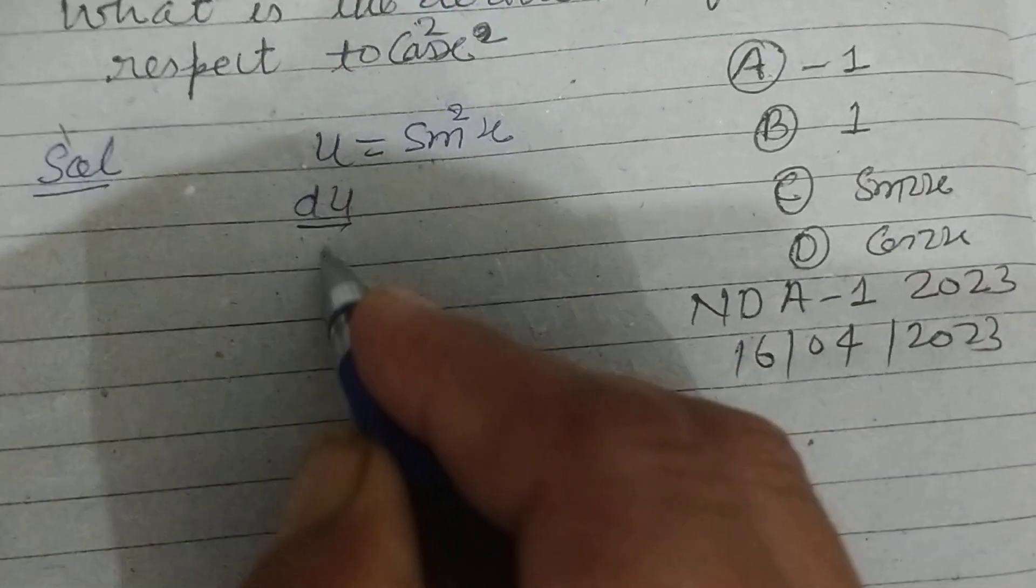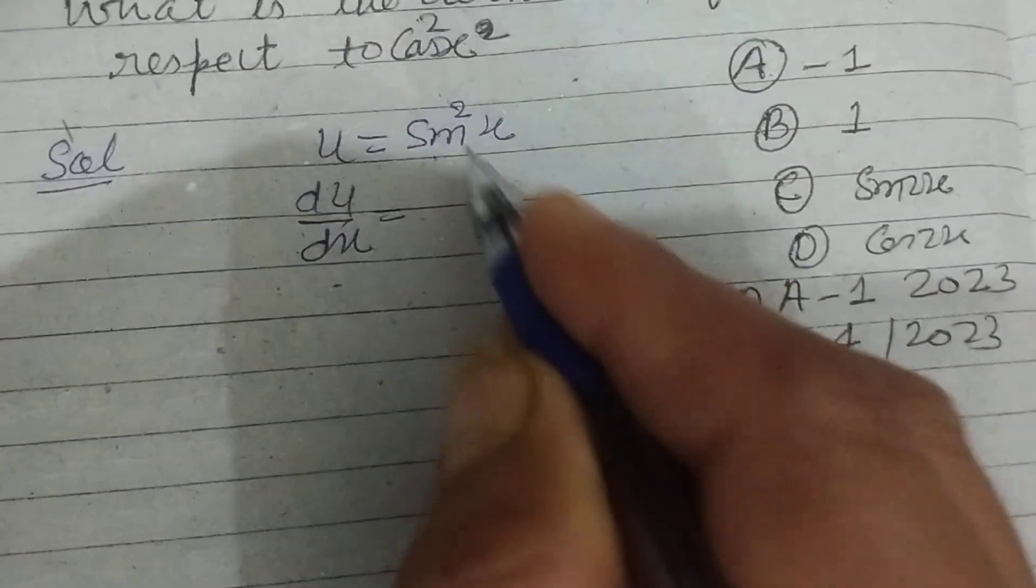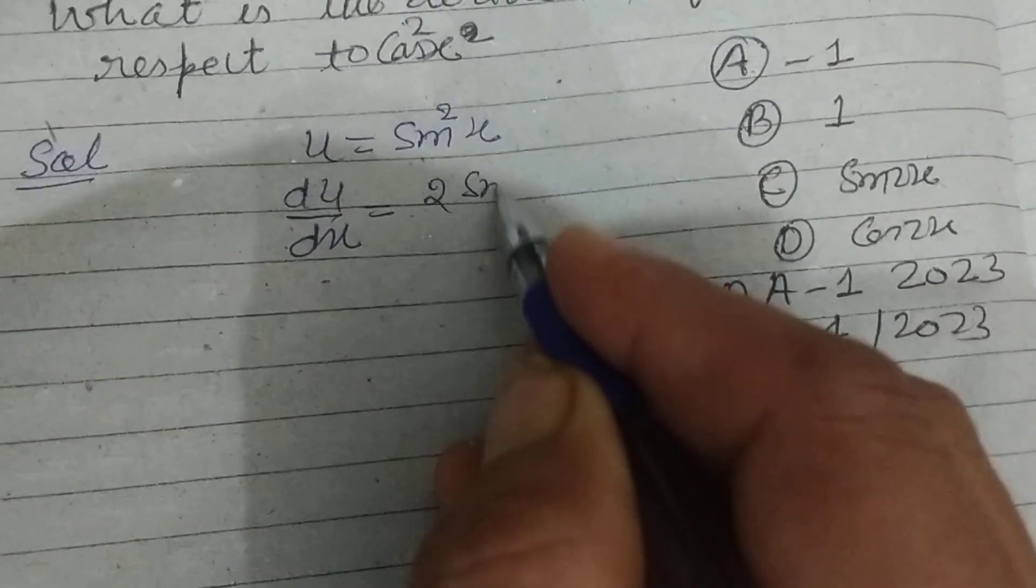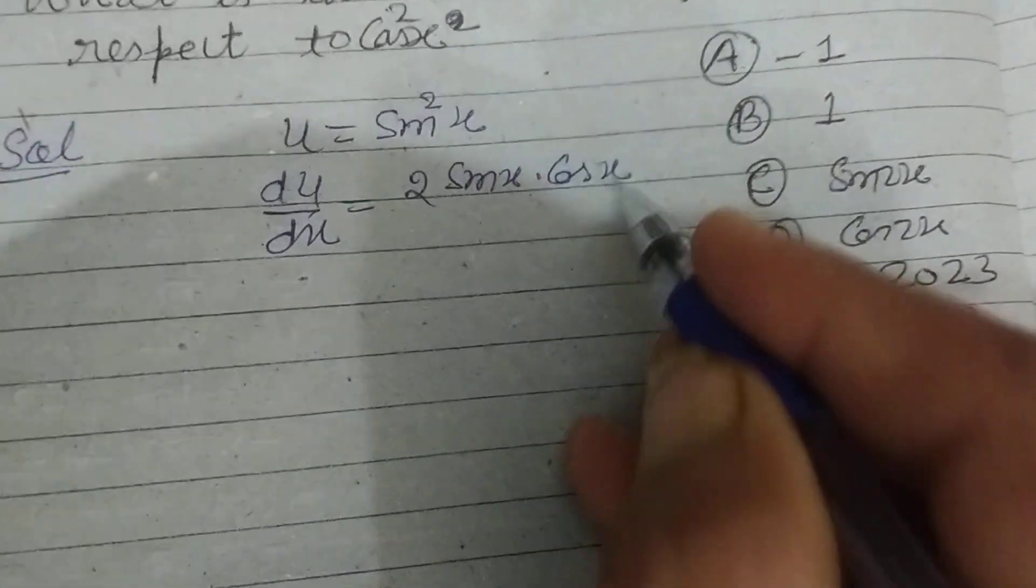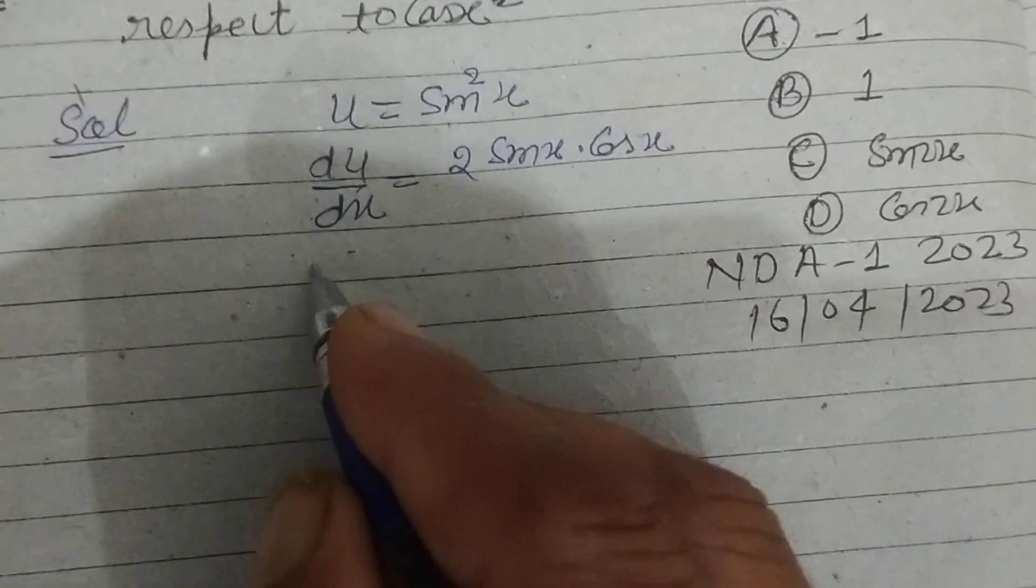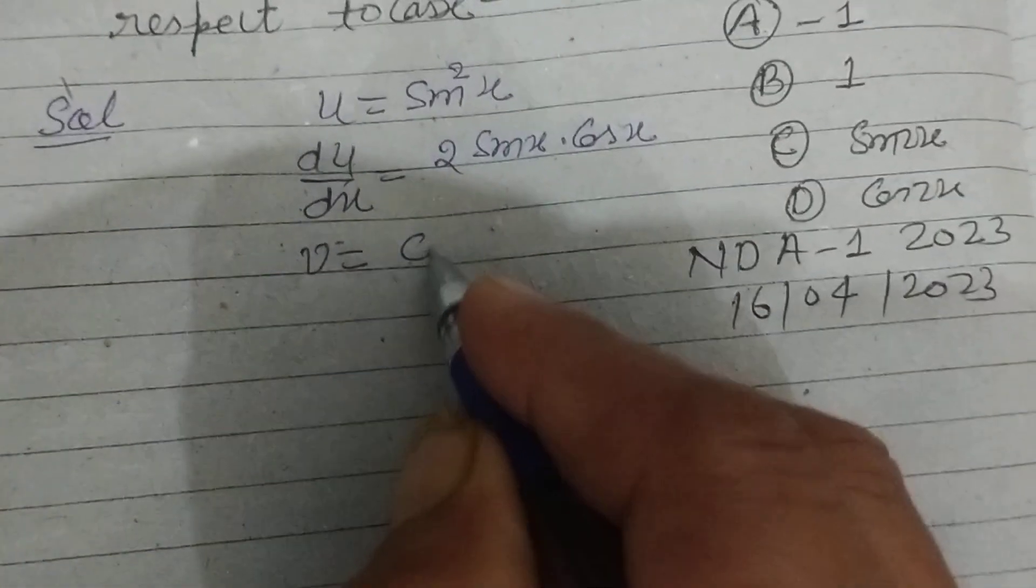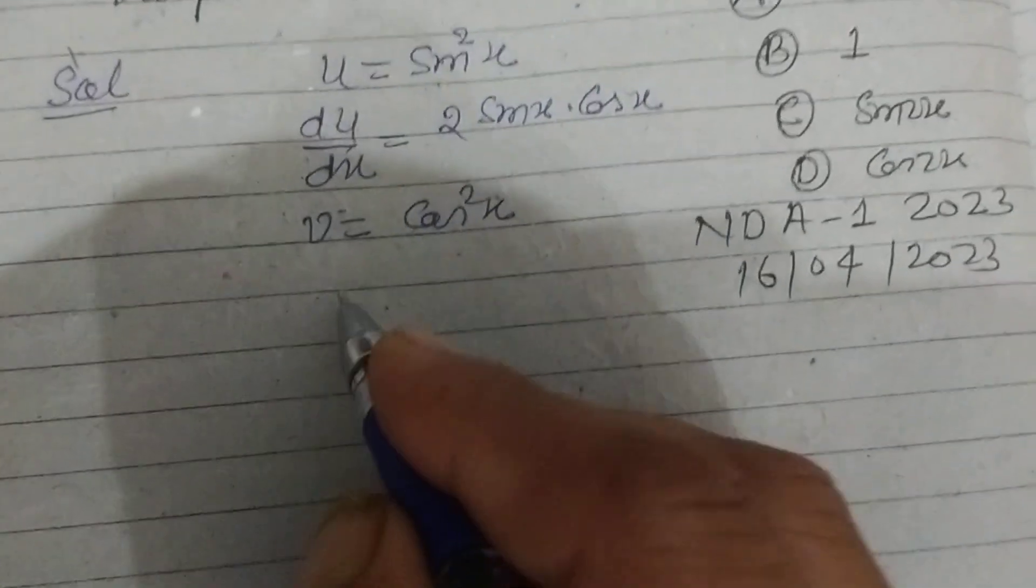So du upon dx equal to 2 sin x cos x, since the derivative of sin x is cos x. And v is given to us as cos square x.